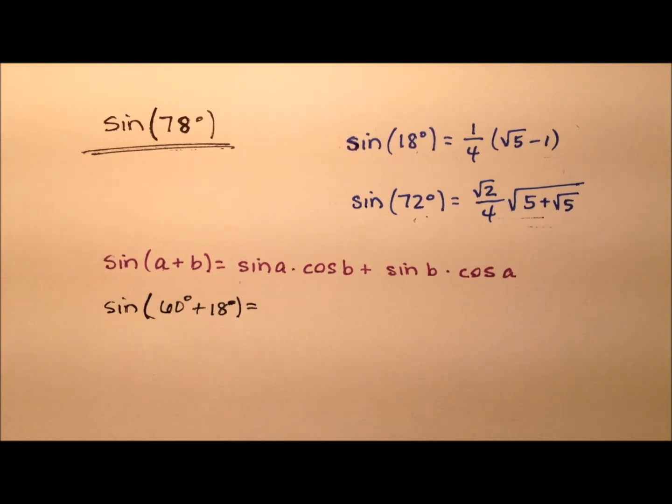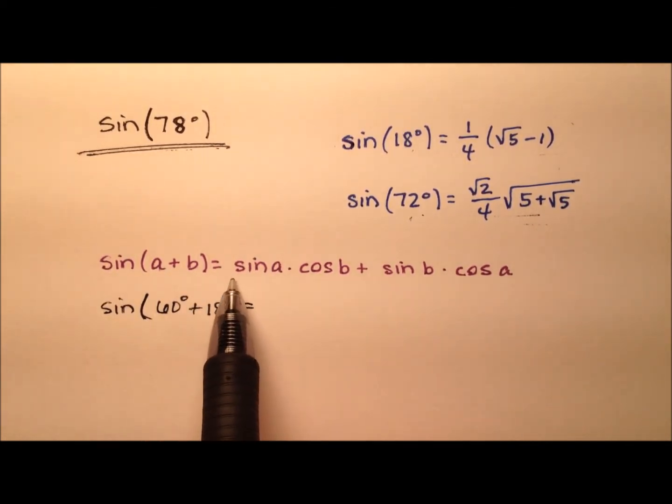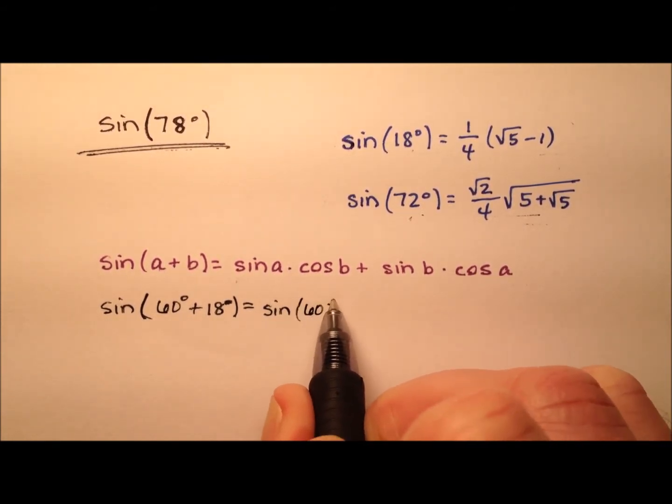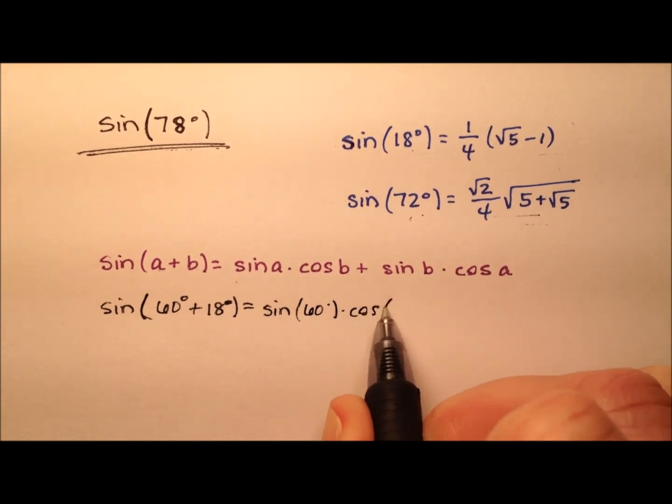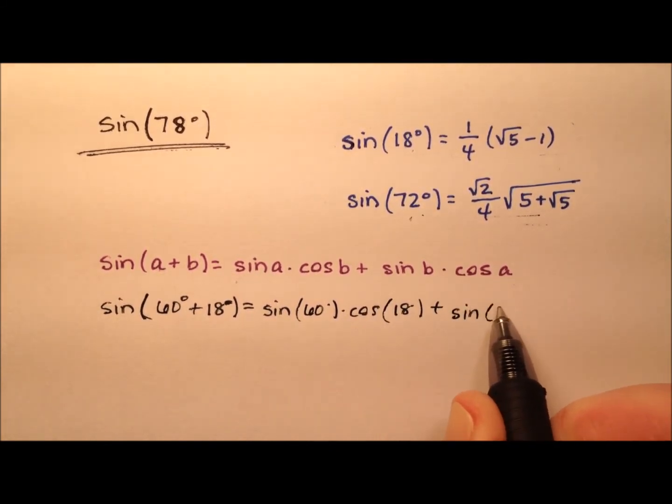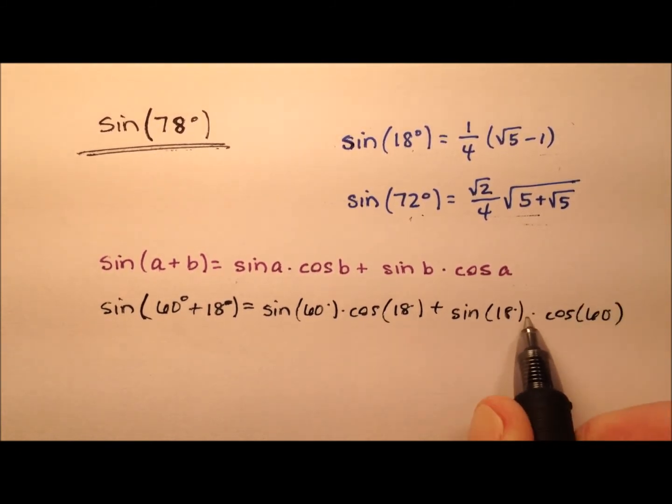Nevertheless, you'll still have the exact value here and it'll be good. Let's go ahead and use this expansion. It's the sine of that first one, which is 60 degrees, times the cosine of 18 degrees, plus the sine of 18 degrees, times the cosine of 60 degrees.